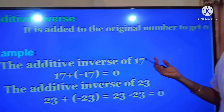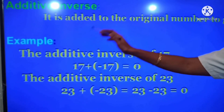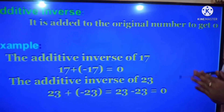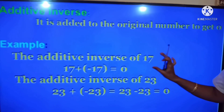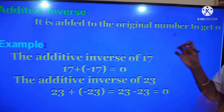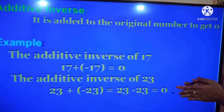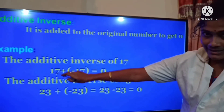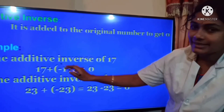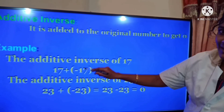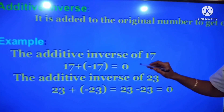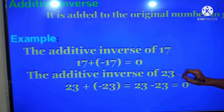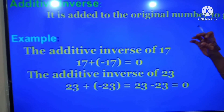The next one is additive inverse. Additive inverse means a number that is added to the original number to get 0. For example, the additive inverse of 17 — which number when added to 17 gives 0? That is negative 17. So 17 plus minus 17 equals 0. The additive inverse of 17 is minus 17. Similarly, the additive inverse of 23 is minus 23. We just take the negative of that number.